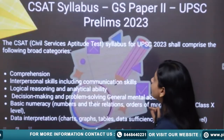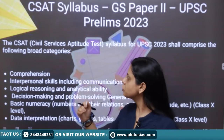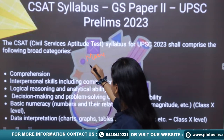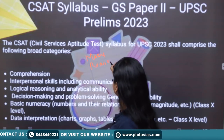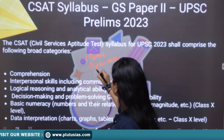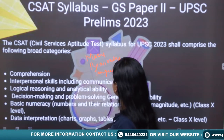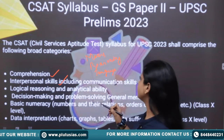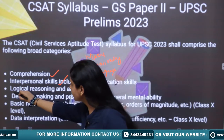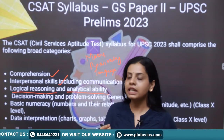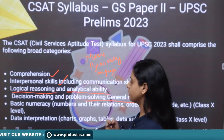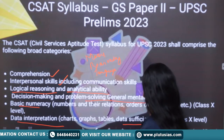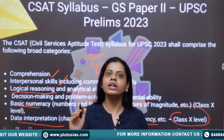If we talk about the syllabus, it can be broadly divided into: Mathematics, Reasoning, and Language. More specifically, it includes Comprehension, Interpersonal Skills including Communication Skills, Logical Reasoning, Analytical Ability, Decision Making, Problem Solving, General Mental Ability, Basic Numeracy, and Data Interpretation — such as charts, graphs, tables, and data sufficiency. The level is only up to Class 10.